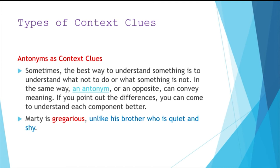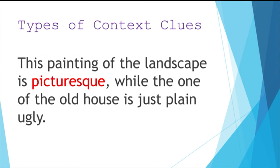Let's look at this sentence: Marty is gregarious, unlike his brother who is quiet and shy. So they are opposite persons — one is quiet and shy and one is gregarious, so obviously he is very sociable and talkative and full of energy. Another example: this painting of the landscape is picturesque, while the one of the old house is just plain and ugly. So picturesque would be the opposite of plain and ugly — very attractive and colorful.